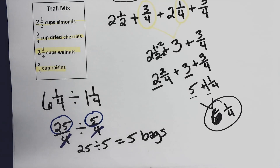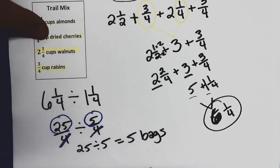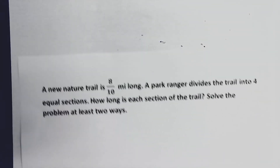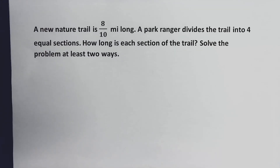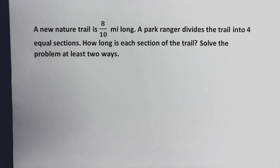We got it! Let's look at another example. A new nature trail is eight-tenths of a mile long. A park ranger divides the trail into four equal sections. How long is each section of the trail? Solve this problem in at least two ways. Let me give you a chance to write that down.